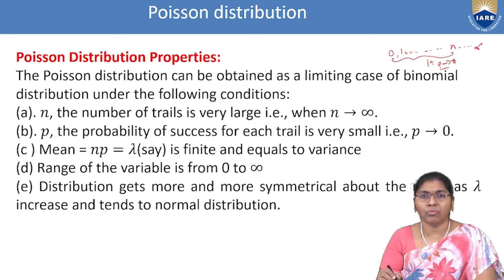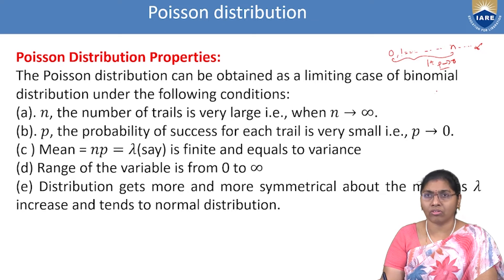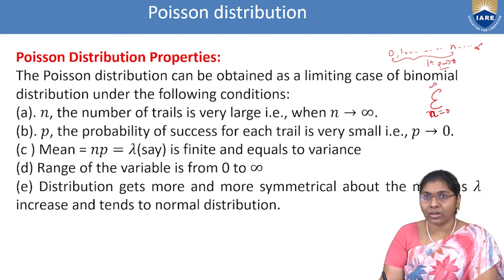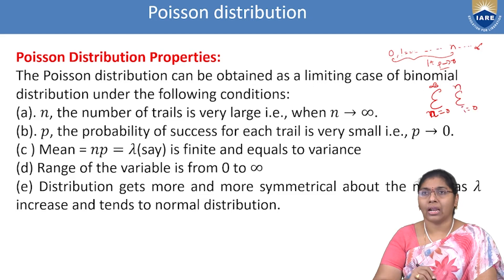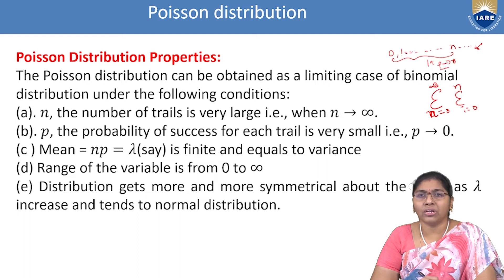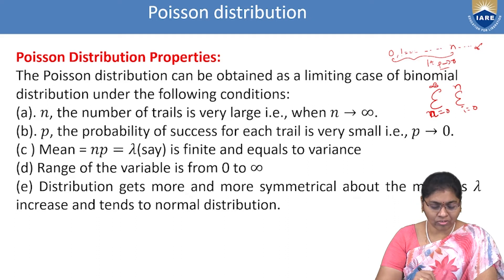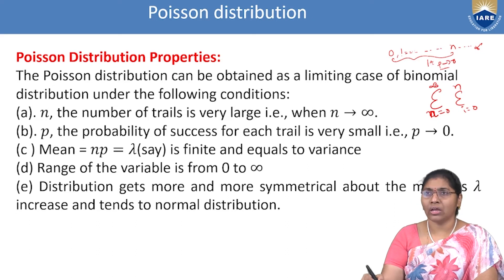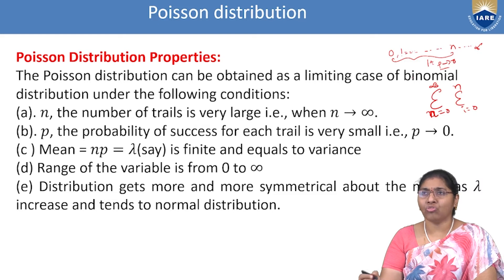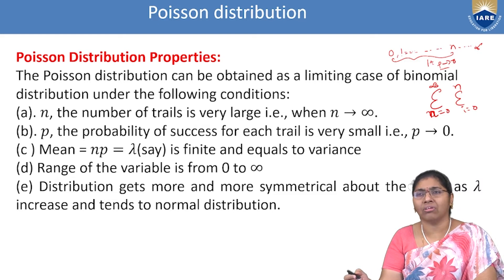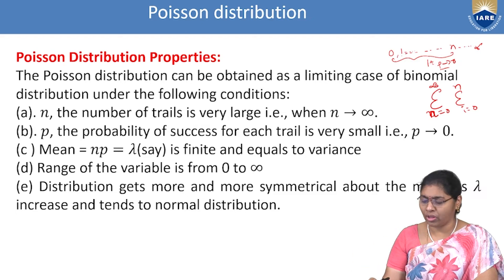The fourth condition: the range of the variable is 0 to infinity — the Poisson distribution is always treated as an integer summation from i = 0 to n. The fifth condition: the distribution becomes more and more symmetrical about the mean as λ increases and tends to the normal distribution.